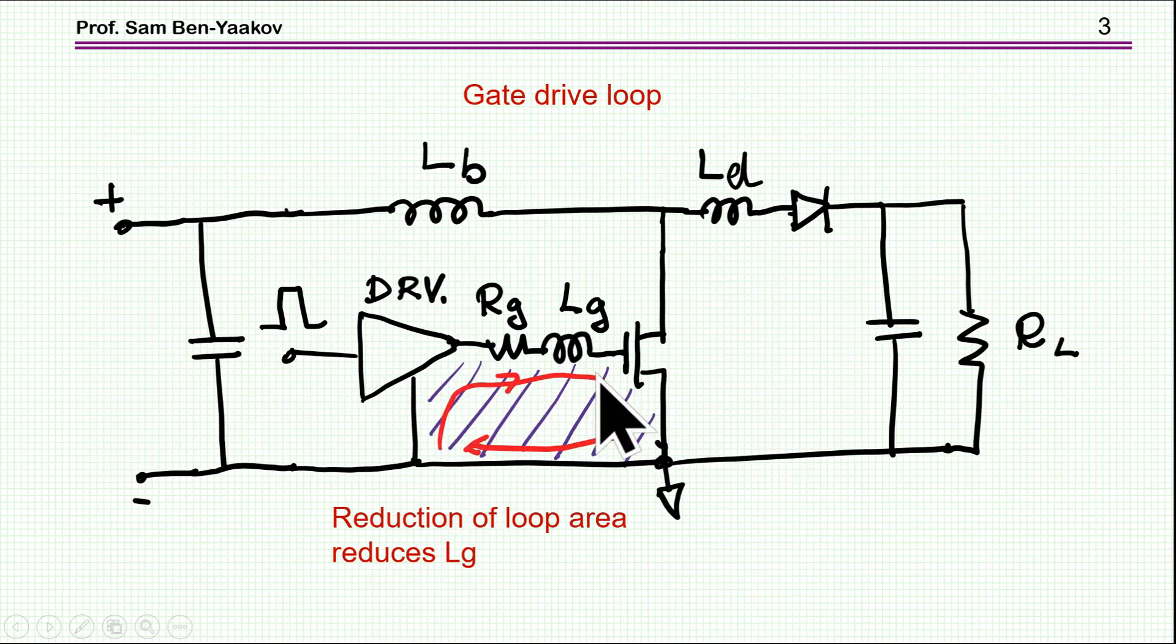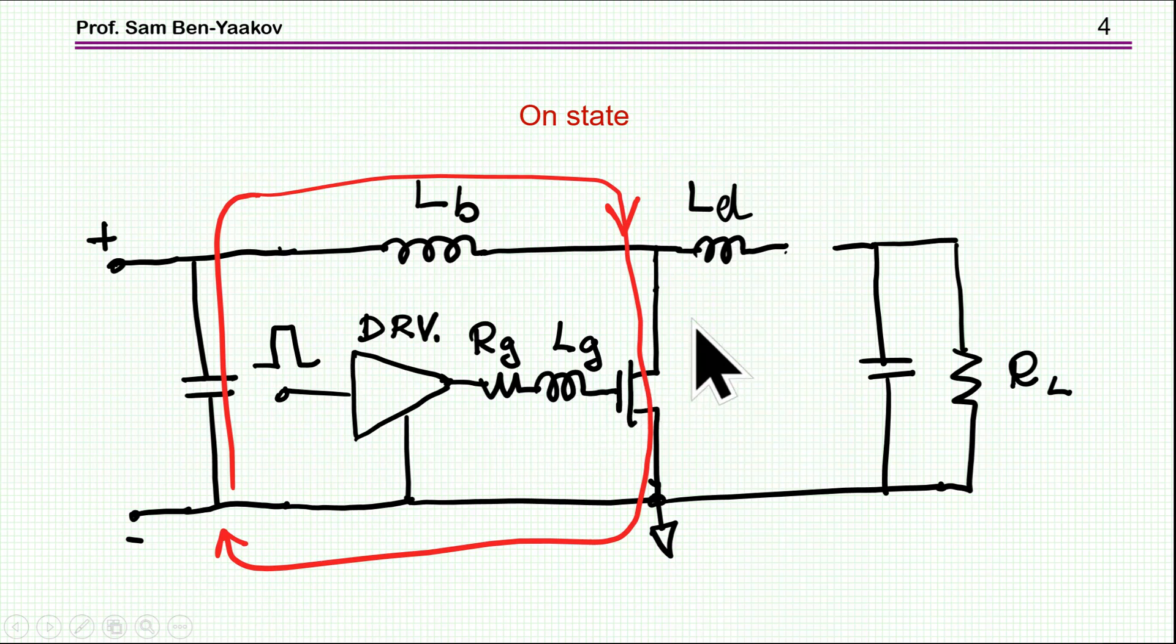This is a continuous current going one way or another way during turn off. The situation is different with this stray inductance of the diode, and here I'm showing an on state, in which case the diode is not conducting. I've just taken it off,